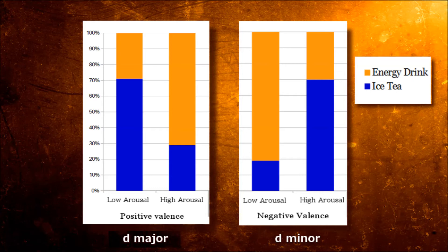But when they were in a bad mood, they decided for the drink that they thought could change their bad mood. So when they were in a bad mood and with low energy, they decided more often for the energy drink. But when they were in a bad mood with a high arousal level, they more often decided for the iced tea.